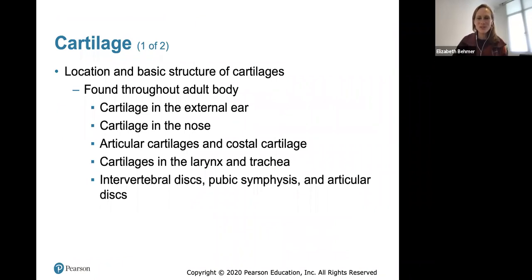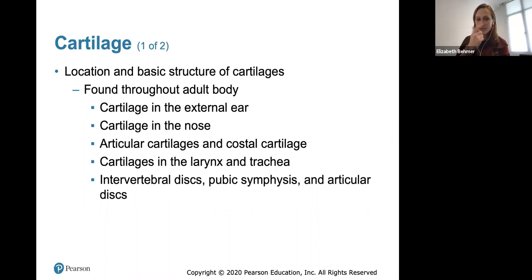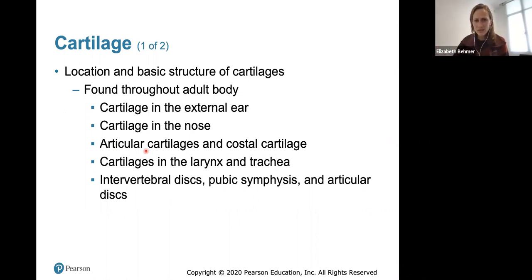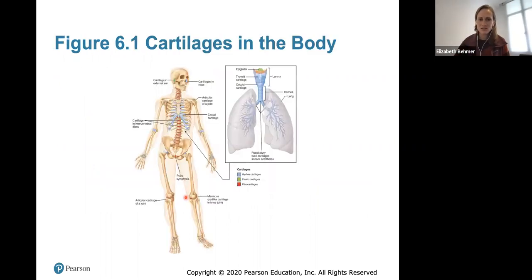Before we start talking about bones, we need to talk about cartilage. Cartilage is found throughout the adult body. You have cartilage in your external ear, your nose, articular cartilages and costal cartilage that cover the ends of your bones so that your bones are never rubbing bone on bone — there's a nice smooth surface. You also have cartilage in your larynx, trachea, intervertebral discs, pubic symphysis, and articular discs.